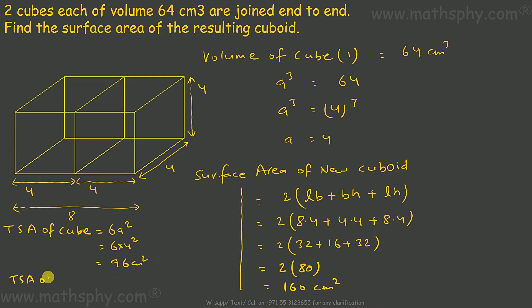So TSA of both the cubes together will give you 96 times 2, that is 192 cm².